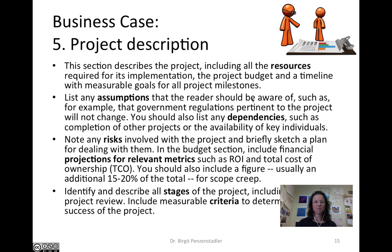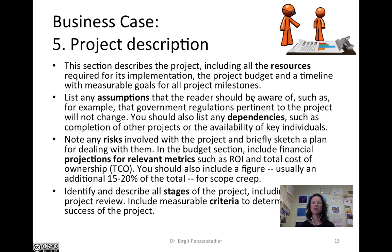The fifth part is the project description. In this section, we describe the project including all resources required for its implementation. That includes the project budget and a timeline with measurable goals for project milestones — otherwise we won't know if milestones have been achieved. We also want to list any assumptions the reader should be aware of, for example that government regulations pertinent to the project won't change. We should also list dependencies — like the completion of other projects or the availability of key individuals, stakeholders, or domain experts — and note the risks involved, with a brief sketch of how you would deal with them if they arise.